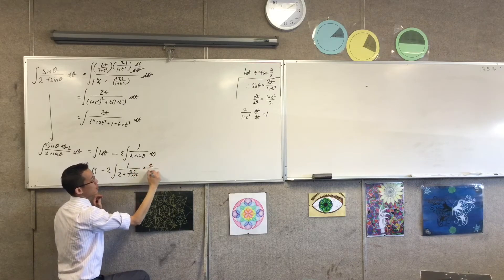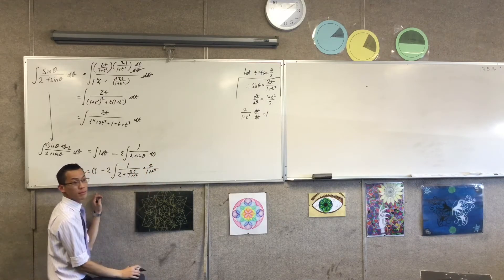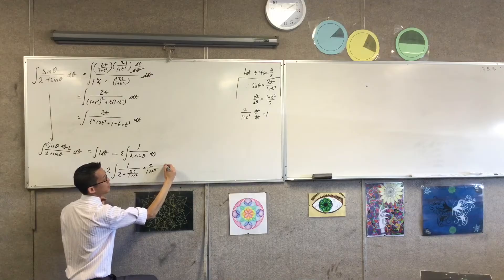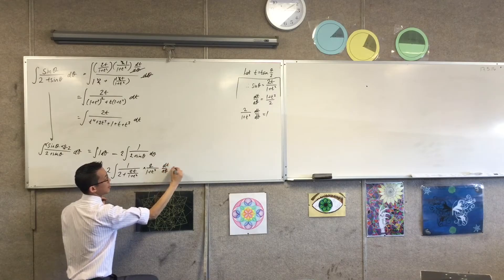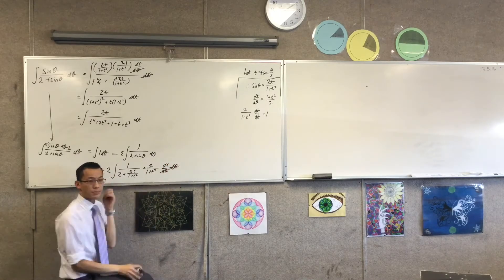So maybe I'll put it times. Yeah, I'll just put it here. 2 on 1 plus t squared. Yep. Times dt on d theta, d theta. Cancel cancel. Yep.